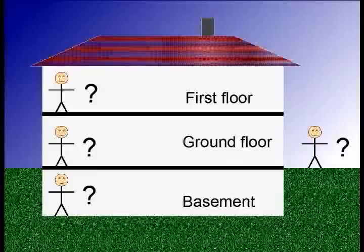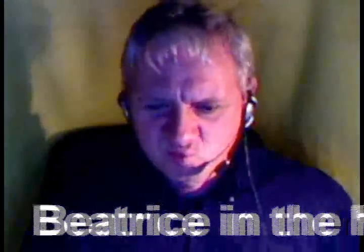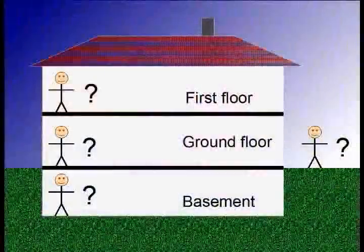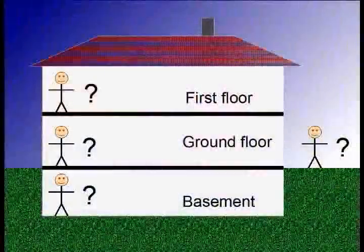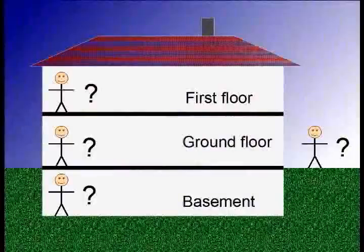Imagine that you're living in a house with a woman named Beatrice. The house has two stories plus a basement. You're wondering if she's in the house right now, so you start searching for her, and so far you've searched one floor — for instance the ground floor — and you haven't found her.